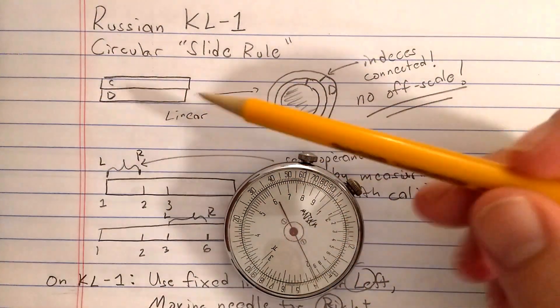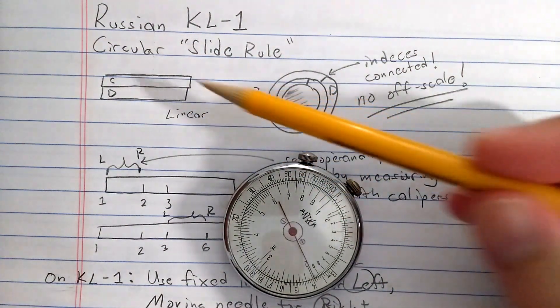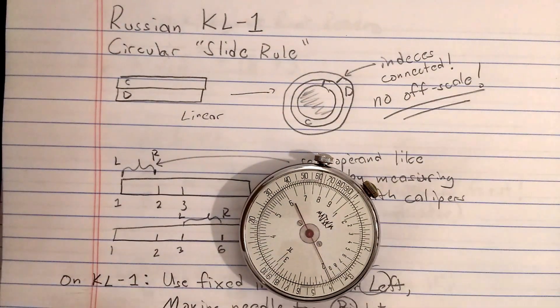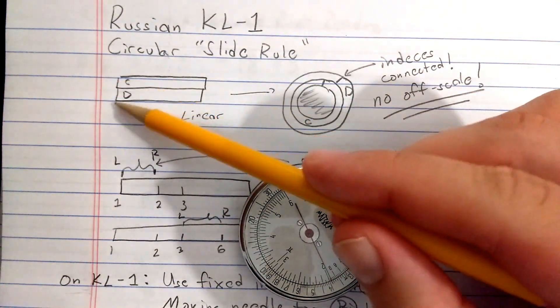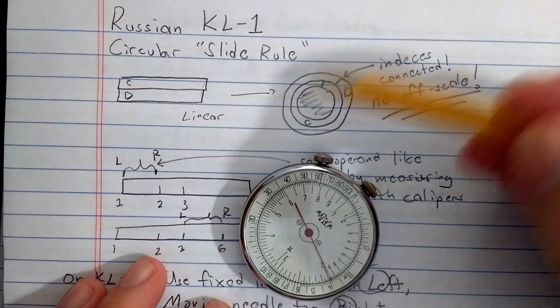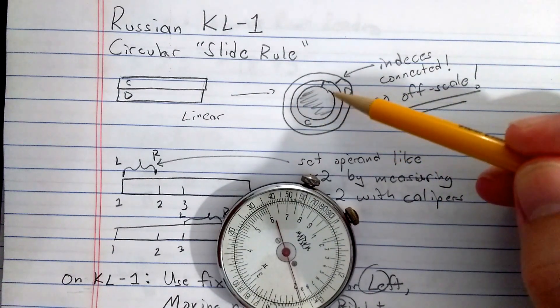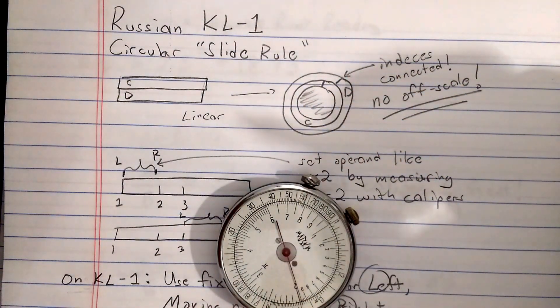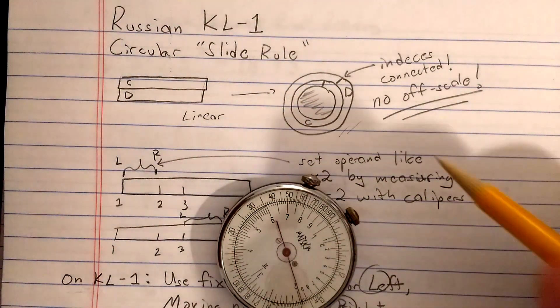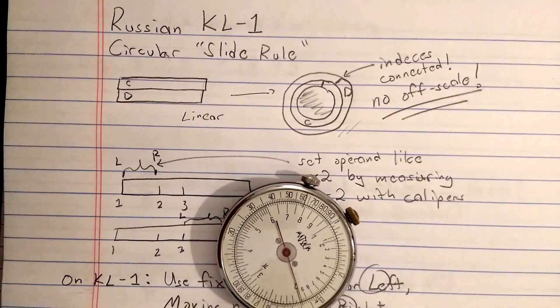What is a slide roll? Well, it's two logarithmic scales next to each other that you can slide to measure logarithmic distances directly. A circular slide roll is where you take this and bend it around, connecting the indices until you get a circle, and you can rotate the C, the one logarithmic scale, inside the other one. The nice thing about the circular slide roll is that you can never go off-scale because the indices are connected to each other on the ends.